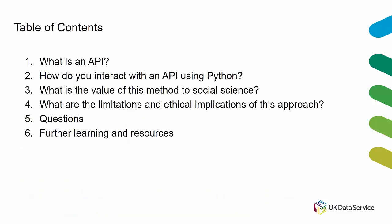Today we're going to cover six key areas: what is an API, a demonstration of how to interact with an API using Python, the value of this approach to social science research, limitations and ethical implications, your questions near the end, and some learning and teaching resources.